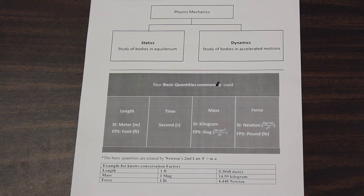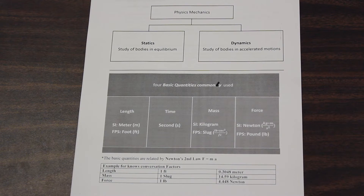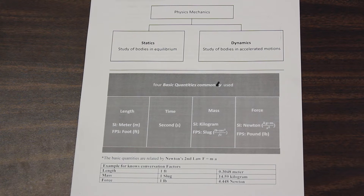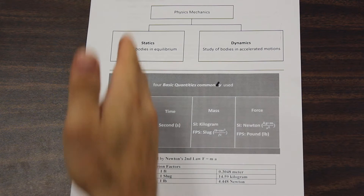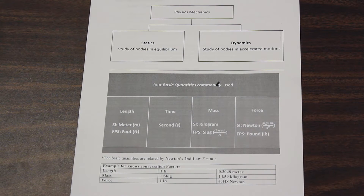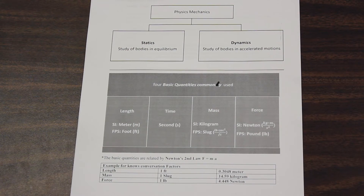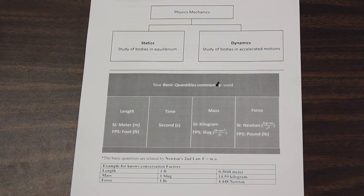A lot of this stuff is going to be very familiar to you, so if it's really easy, it never hurts to go over it again. Physics mechanics is broken up into two bodies of study: statics and dynamics. Statics is the study of bodies in equilibrium — bodies that aren't moving — where the summation of all the forces in the system are equal to zero, which makes problems a lot more simple than when they're moving, which is what we have in dynamics — the study of bodies in accelerated motion.